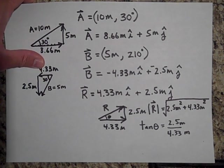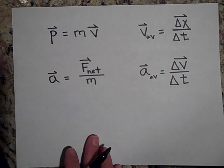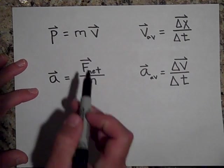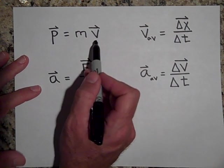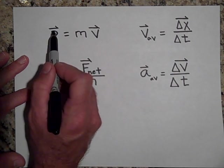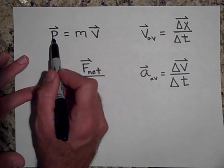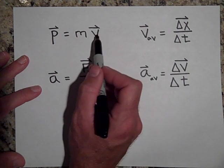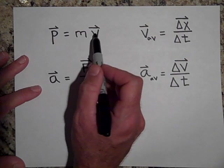A couple of other things: when you multiply a scalar times a vector, you get a vector quantity. For example, a scalar mass times a vector velocity gives momentum — also a vector. The vector quantity you get will always have the same direction as v, so momentum p is always in the same direction as v.